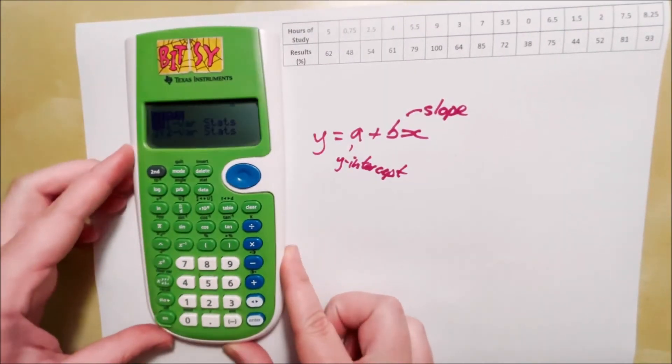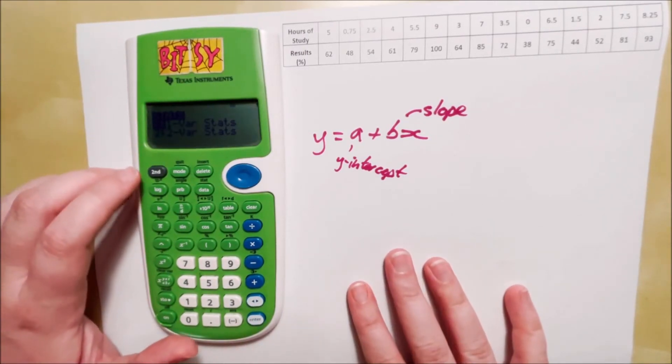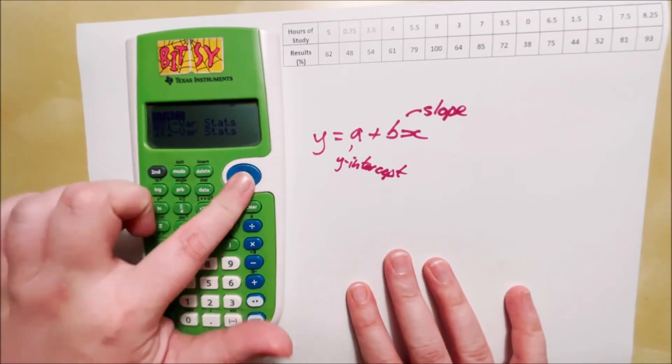Number one would be if you just wanted things like mean, median, mode, things like that, the five number summary. Okay, so we want two var stats.